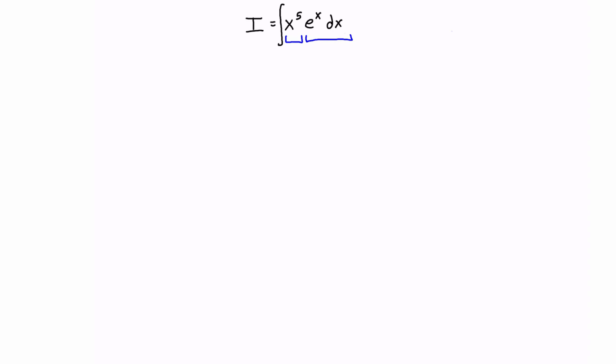To apply this the fast way, one part has to tend to 0 after successive derivations and the other part has to be easy to integrate. In this case, x to the 5th would tend to 0 with successive derivations and e to the x dx is easy to integrate. So if you can split your integrand into two parts like that, then you can apply integration by parts the fast way.